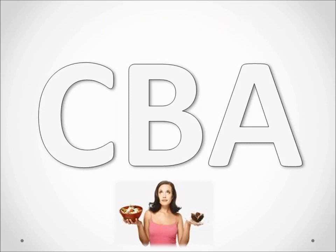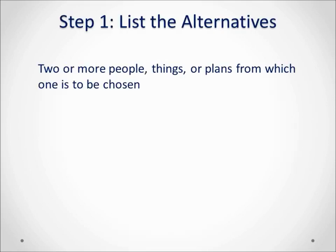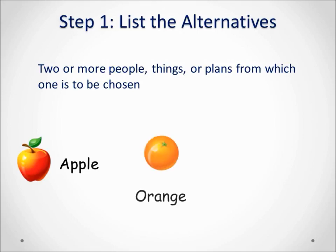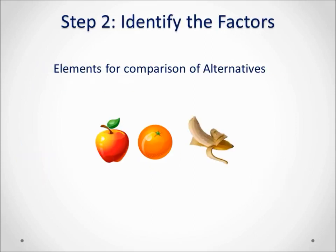Let's get started on the CBA steps. The first step is to identify alternatives — the people, things, or plans from which one option is to be chosen. For our CBA example we will use an apple, an orange, and a banana as alternatives for a post-workout snack. Step Two is to identify the factors we will use to differentiate the alternatives.